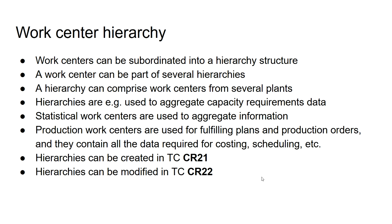When building a hierarchy you should distinguish between statistical work centers and production work centers. Statistical work centers are used for aggregating information and data, whereas production work centers are used to actually conduct the operations. Production work centers are used for fulfilling the plans and fulfilling production orders — they contain information required for costing, scheduling, and can also be the source for retrieving information on the production process.